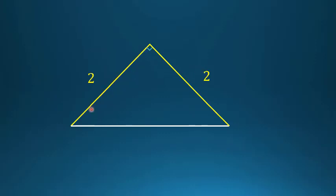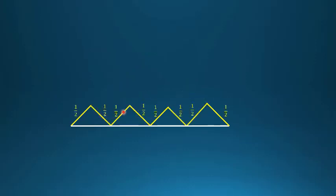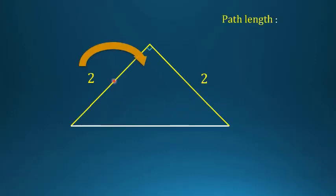Consider a right-angled triangle with both legs equal to 2. We connect the midpoints like this, creating segments of length 1, 1, 1, 1. The path length of the yellow staircase figure is 2 + 2 = 4.